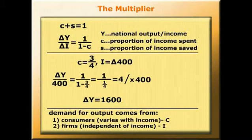That term, 4, that is, 1 over 1 minus c, is the multiplier. Output increases by a multiple of the original increase in autonomous demand.